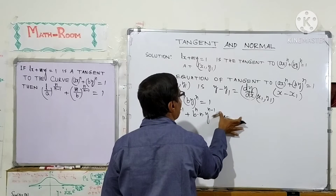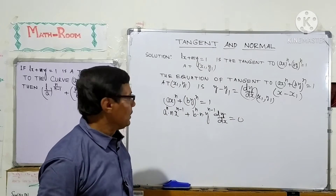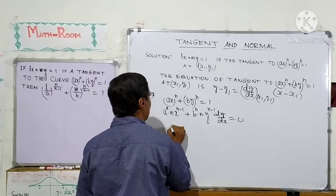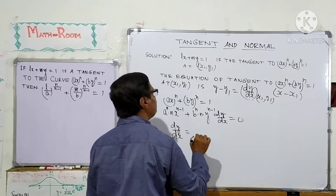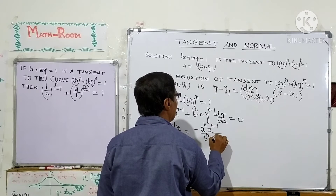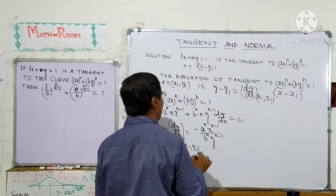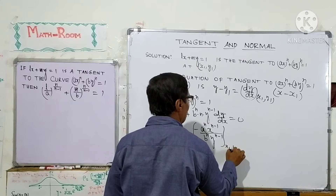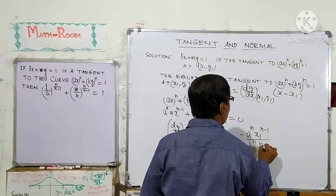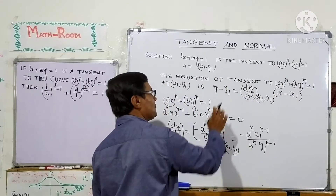After differentiating both sides with respect to x and setting equal to zero, we get dy/dx equals minus An·x to the power n minus 1 over Bn·y to the power n minus 1. At the point x1, y1, the value of the derivative is minus An·x1 to the power n minus 1 over Bn·y1 to the power n minus 1. This is also the gradient of the tangent.